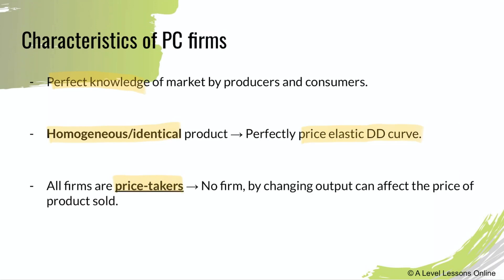All firms sell the same product — homogenous or identical products — resulting in a perfectly price-elastic demand curve. All firms are price takers: no firm can change output by changing the price of their products. Because there are no barriers to entry, everyone sells the same thing for the same price, and with such a large number of buyers and sellers, every firm just takes the market price.